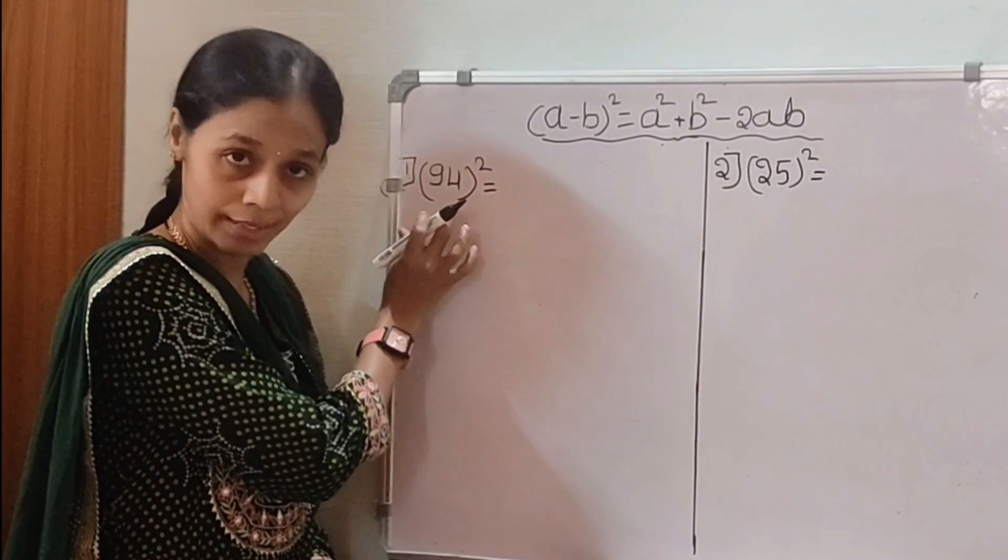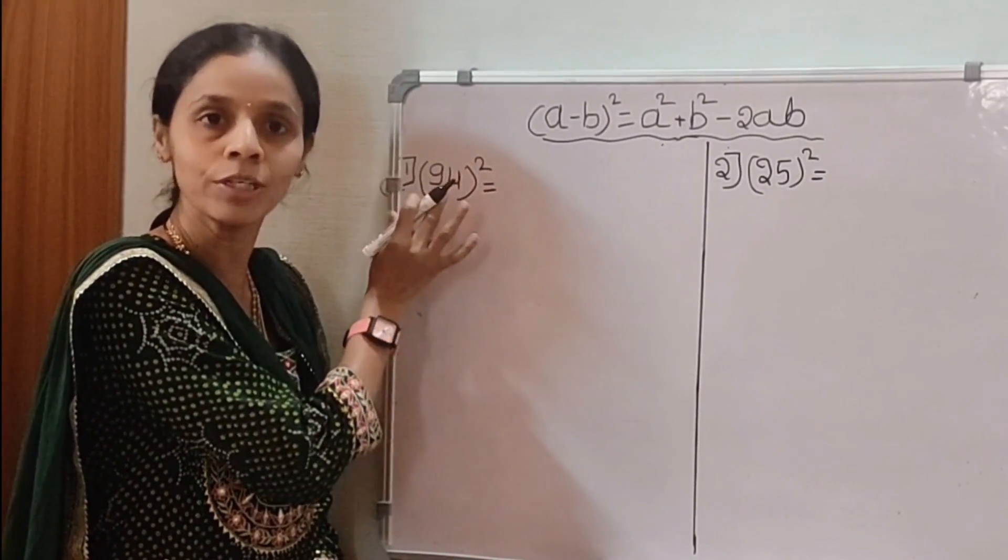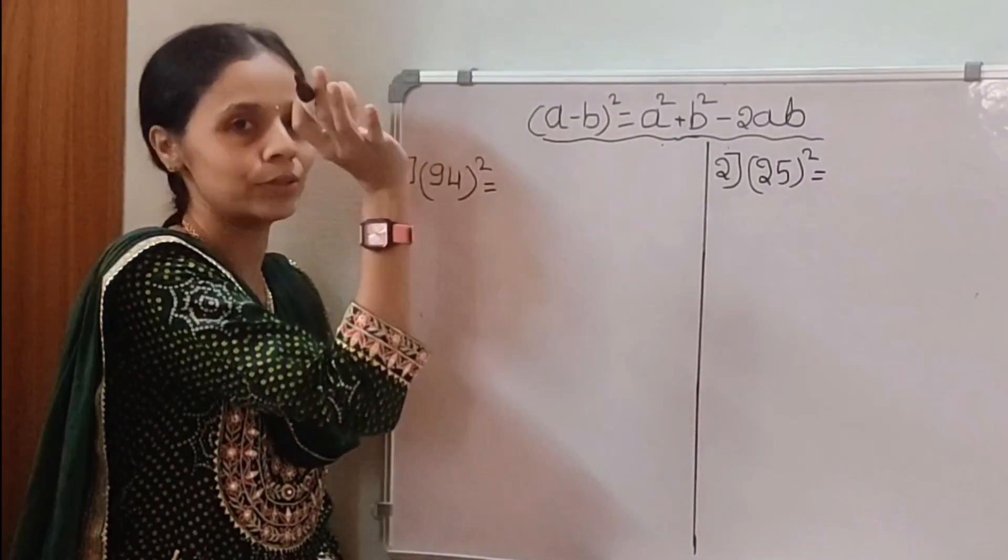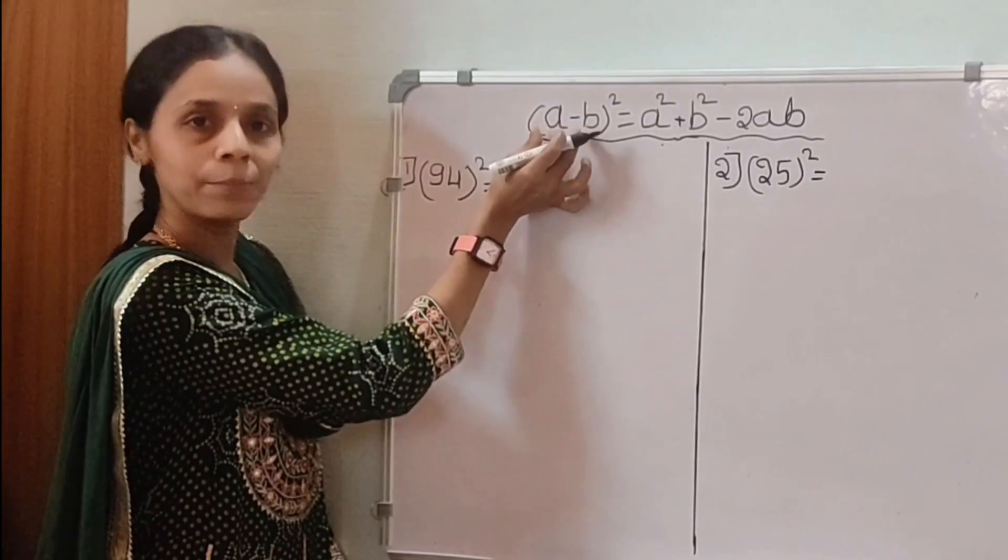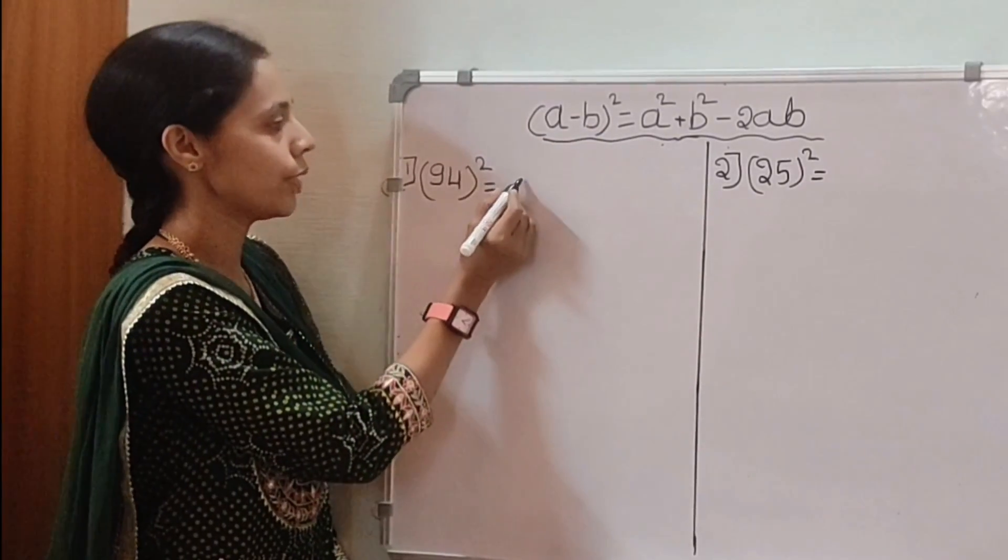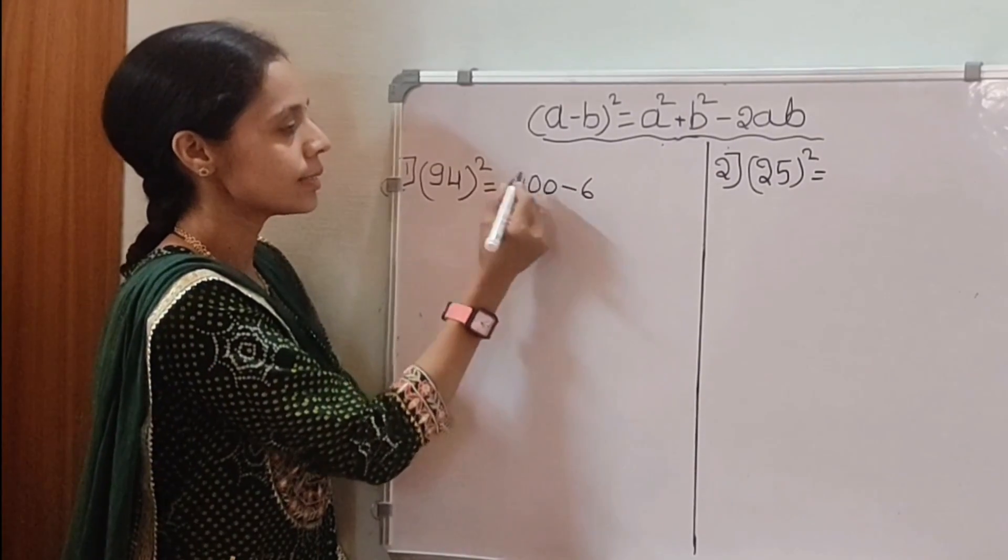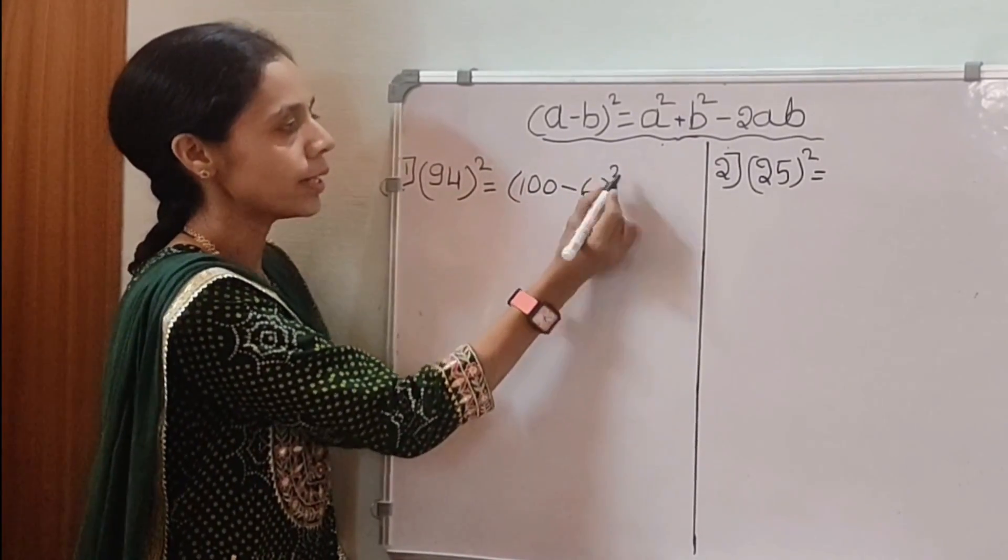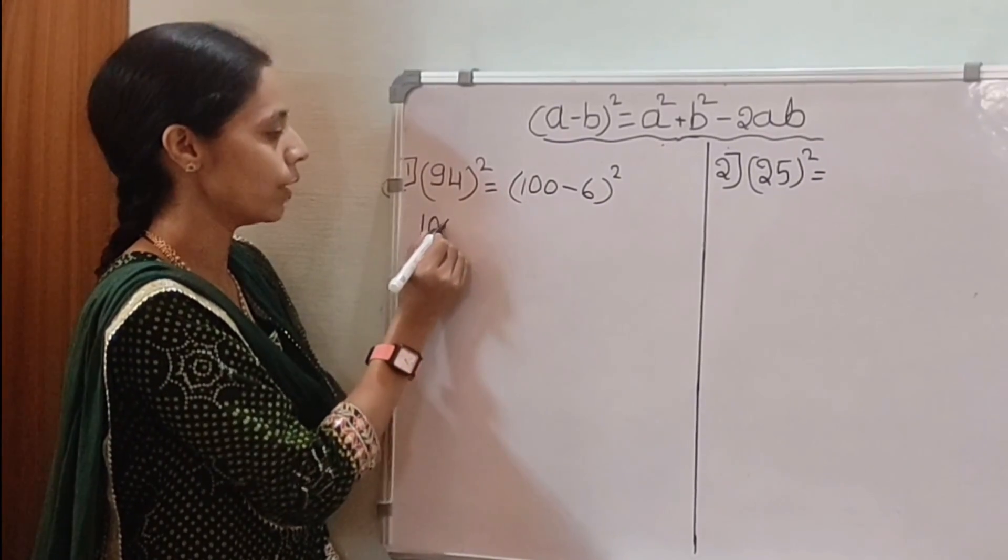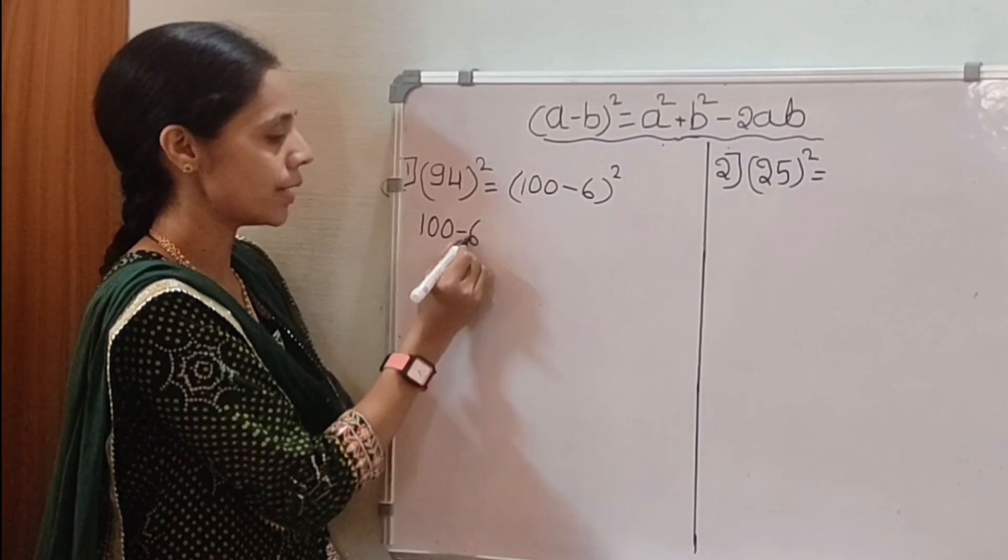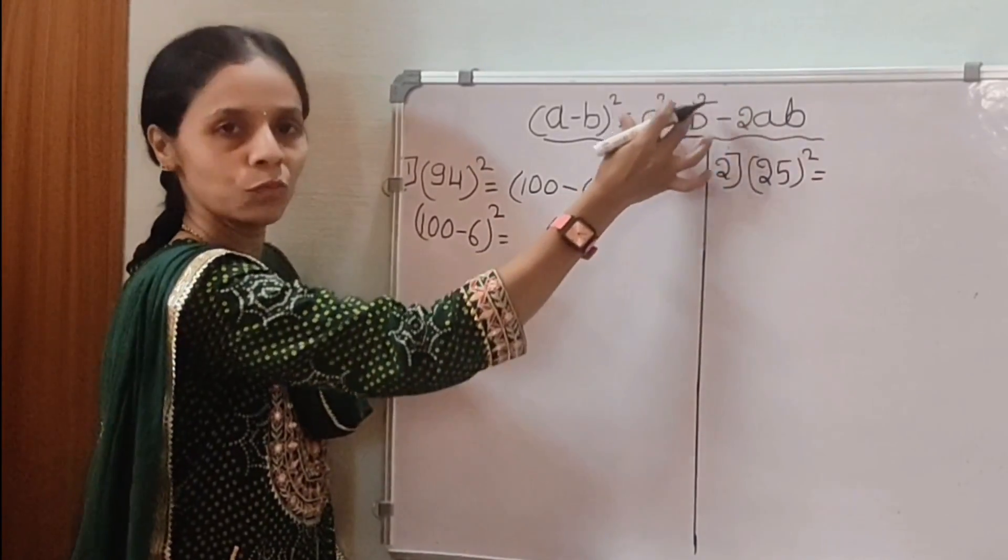94 is there. We find out the square of 94 using (a - b)². First we divide into (a - b) form. 100 - 6 whole square. After we simplify this one, 100 - 6 whole square using this formula.